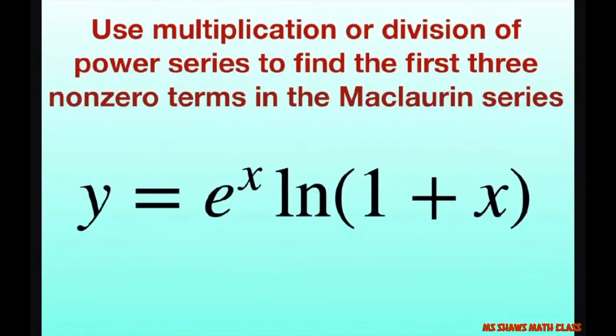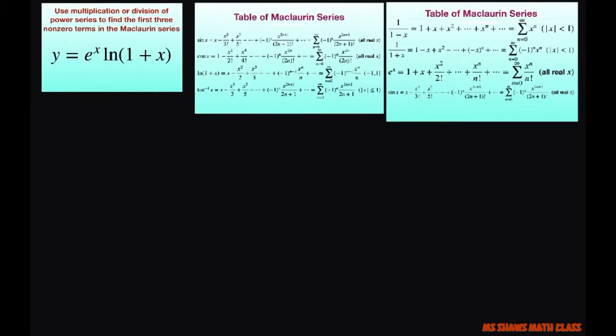Hi, everyone. We're going to use multiplication of the power series to find the first three non-zero terms in the Maclaurin series y equals e to the x times ln of 1 plus x. So basically, we're going to put it together and multiply everything out.